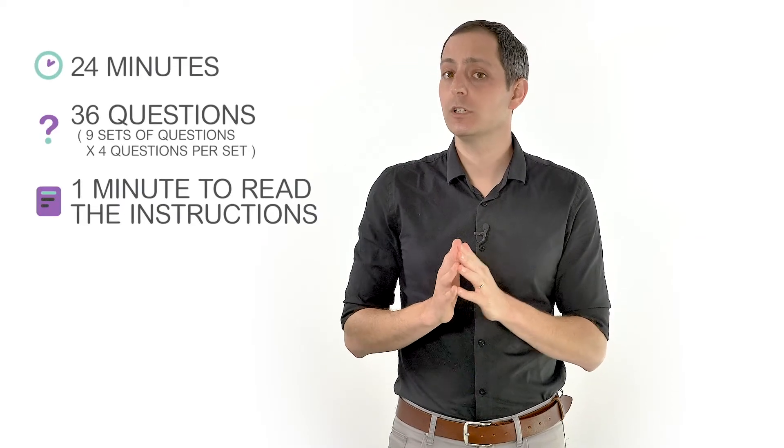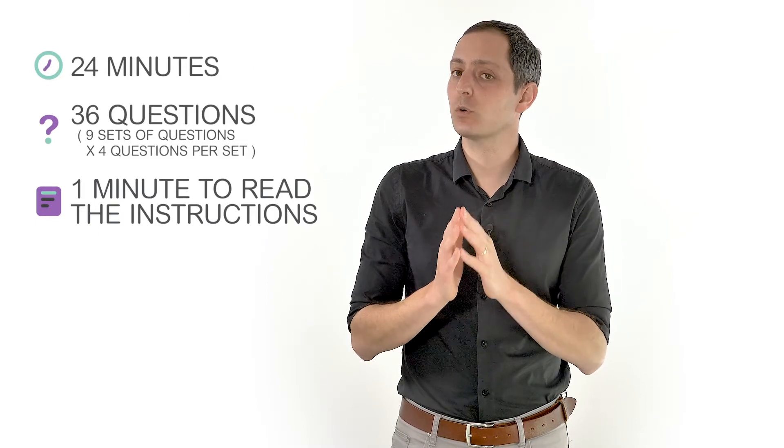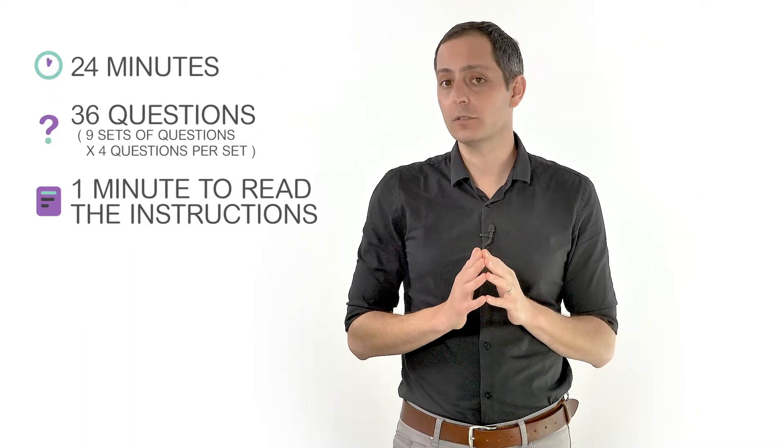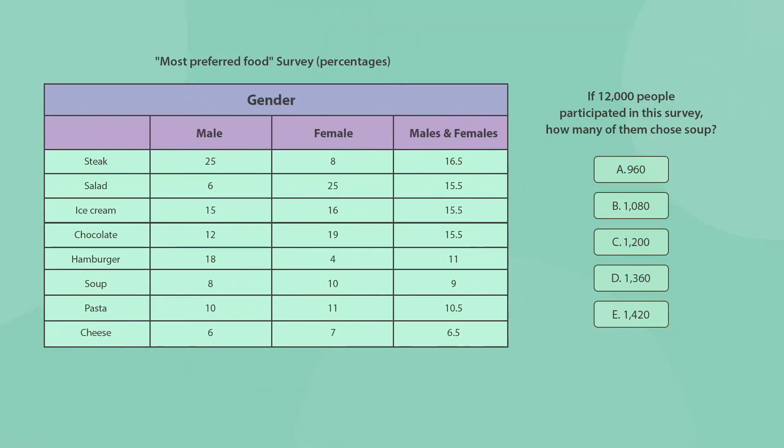The 24-minute quantitative reasoning section is comprised of 36 questions, arranged in 9 sets of 4. Each set includes a preliminary description of the question, usually accompanied by a table, graph or chart. Take a look at this sample question.